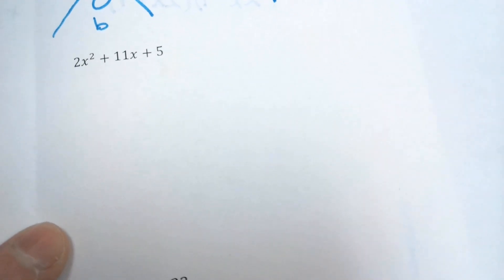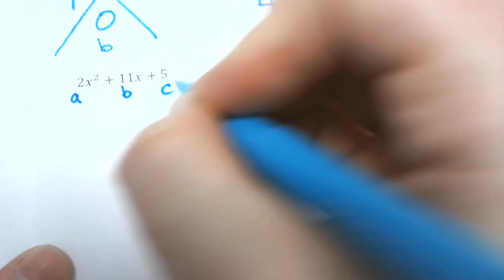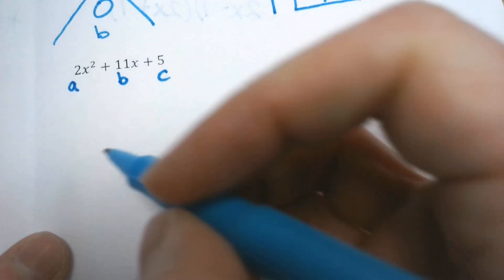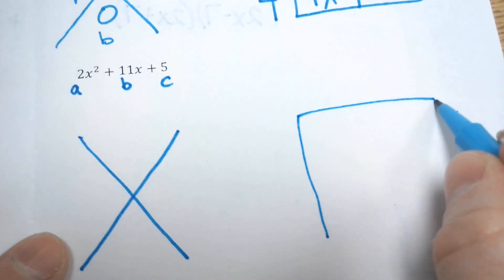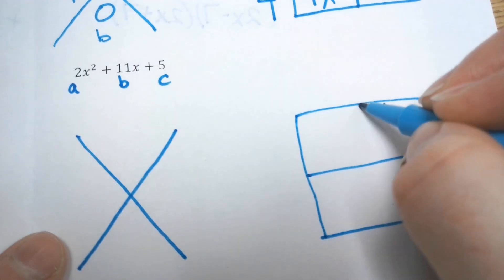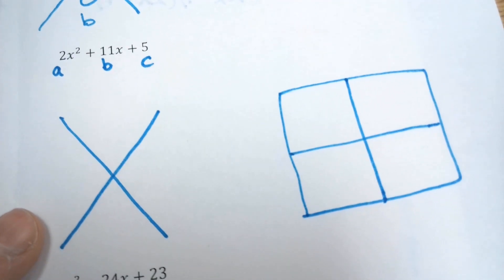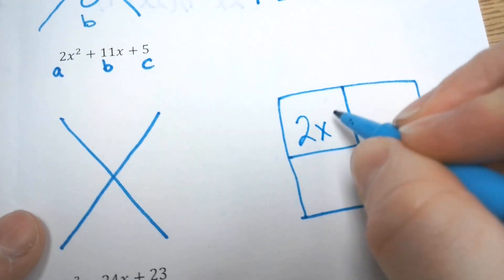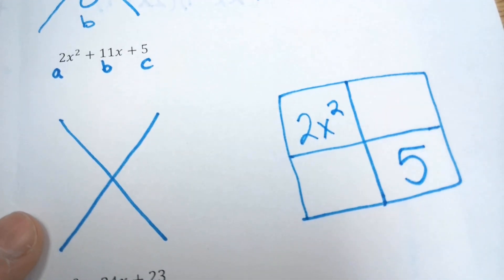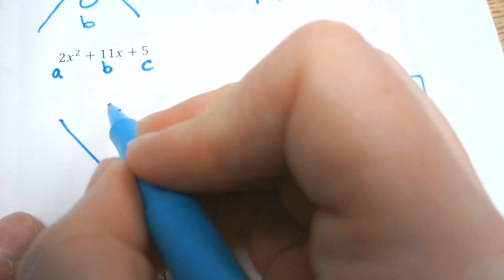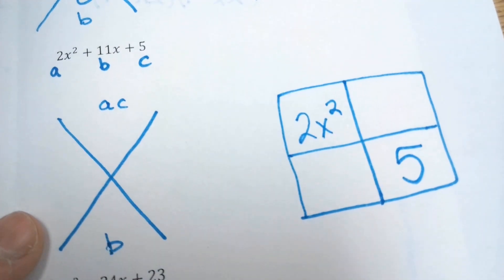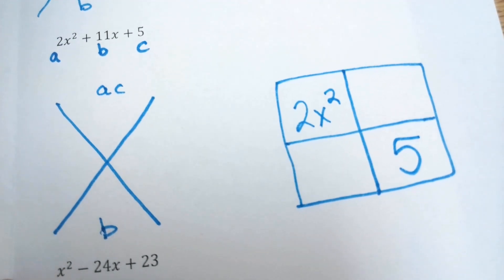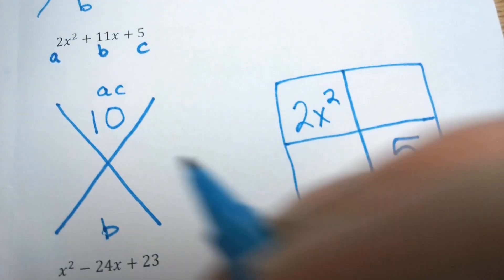Alright, let's go back to our problems. 2x² + 11x + 5. This is A, this is B, this is C. Make your X, make your box. First term, last term. A times C, and B. Go ahead and do those. A times C, 2 times 5 is 10. B is 11.